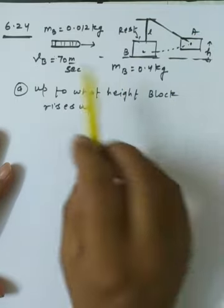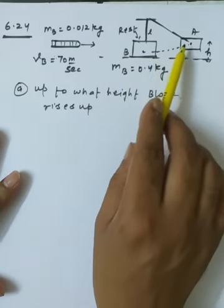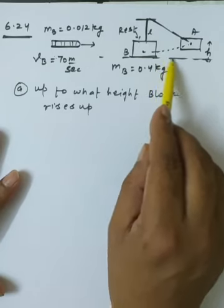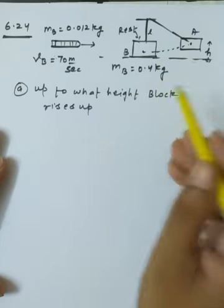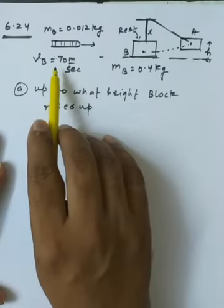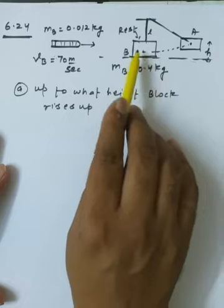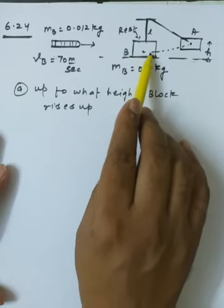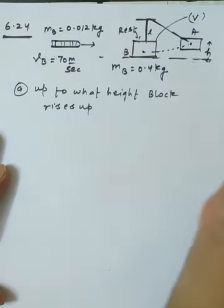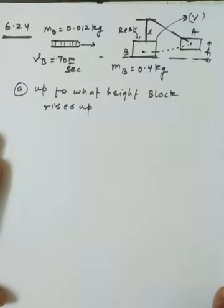The bullet embeds inside the block and the block moves upward. Part (a): to what height does the block rise? Since the bullet sticks to the block, they move together with a common final velocity.